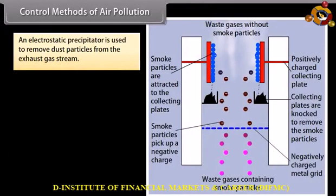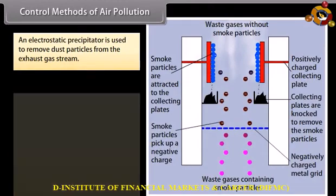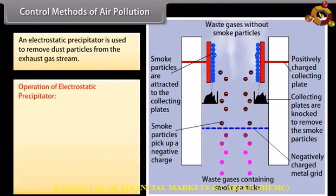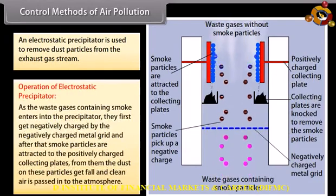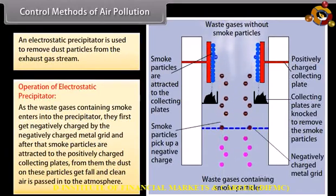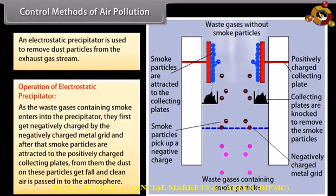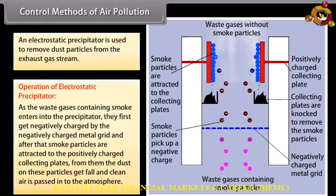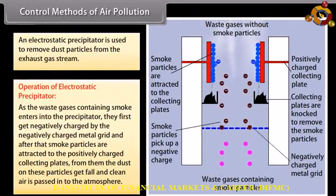Control methods of air pollution. An electrostatic precipitator is used to remove dust particles from the exhaust gas stream. Operation of electrostatic precipitator: as the waste gases containing smoke enter the precipitator, they first get negatively charged by the negatively charged metal grid, and after that, smoke particles are attracted to the positively charged collecting plates. The dust on these particles falls and clean air is passed into the atmosphere.